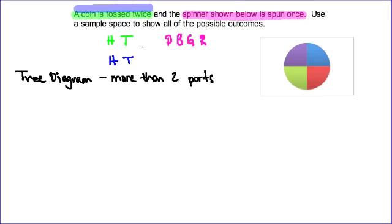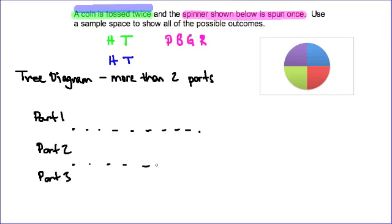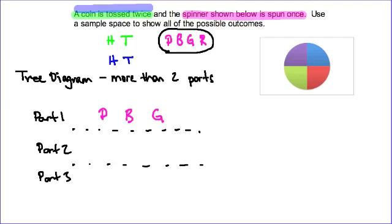Now I'm going to start building a tree diagram. I'll have 3 parts to my event: part 1, part 2, and part 3. A good technique is to start with the part that has the most outcomes — in this case the spinner. For part 1 I have 4 different outcomes: the spinner can end on purple, blue, green, or red.